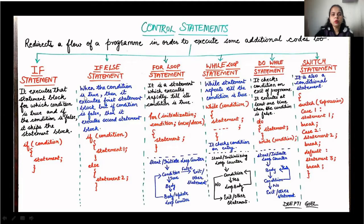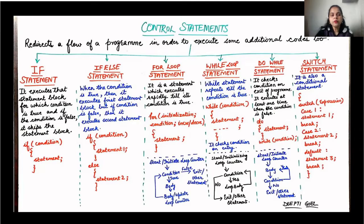The first control statement is the if statement. The if statement is a conditional statement where it asks whether a condition is true or false. The if statement will execute that statement block for which the condition is true, and if the condition is false, it will not execute — it will skip the statement block.